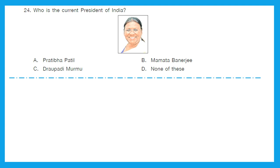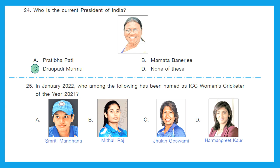Question 24: Who is the current President of India? She is Draupadi Murmu. Option C is the right answer. Question 25: In January 2022, who among the following has been named as ICC Women's Cricketer of the Year 2021? The right answer is option A, Smriti Mandhana. For your information, the ICC Women's Cricketer of the Year 2022 is Natalie Sciver from England.